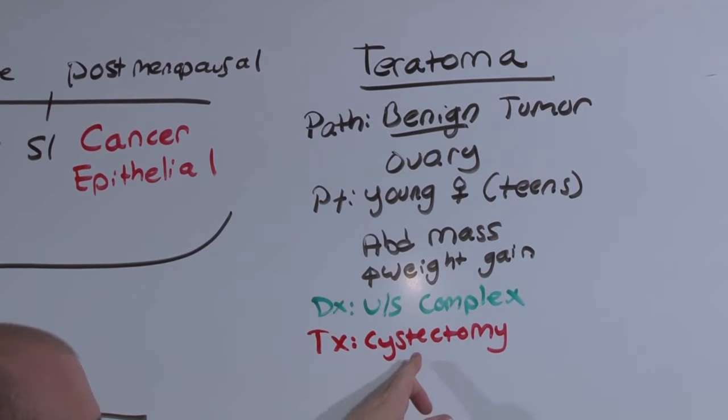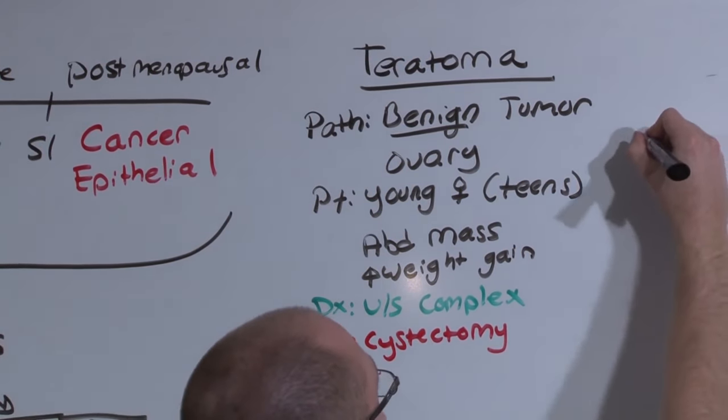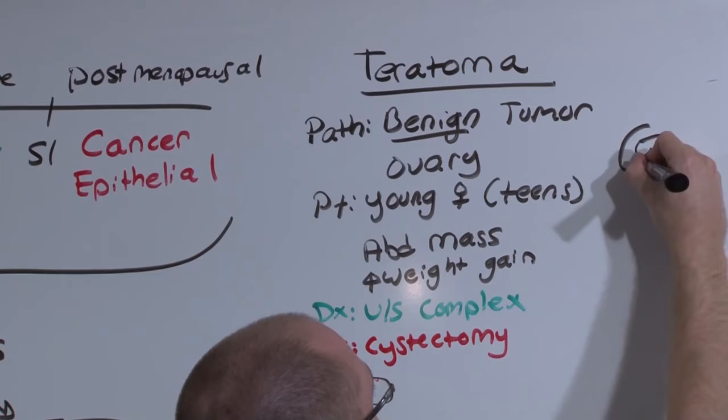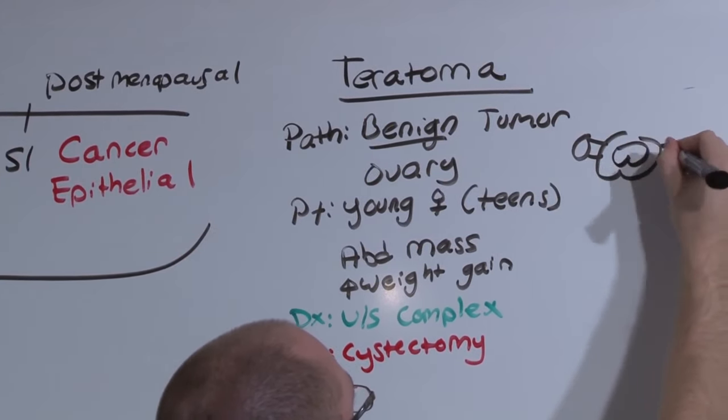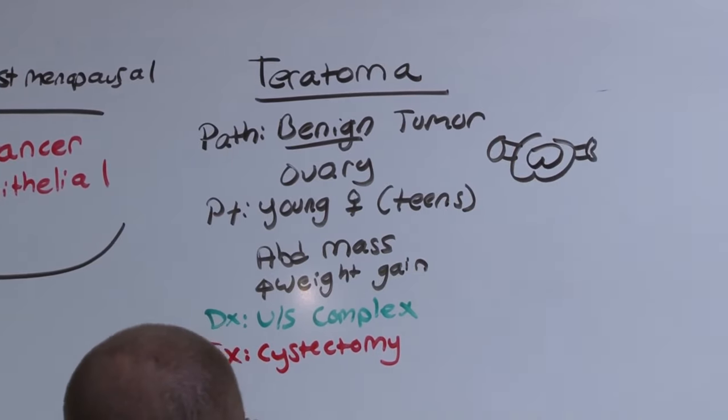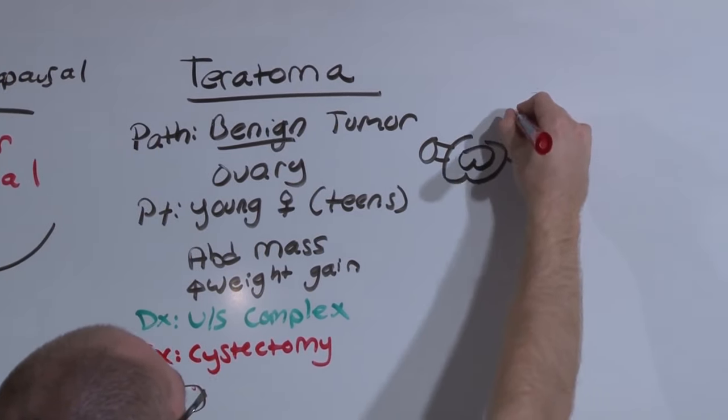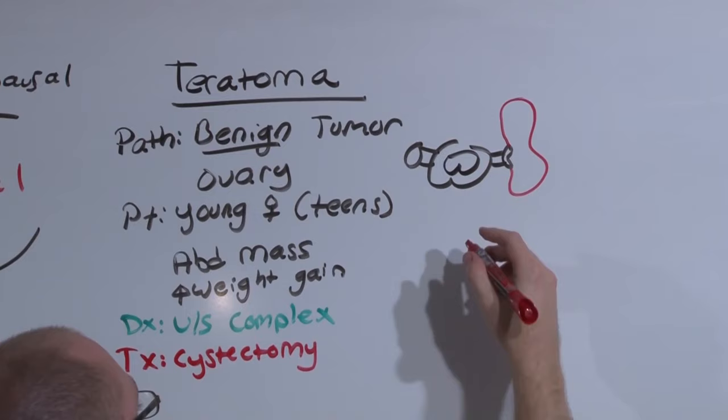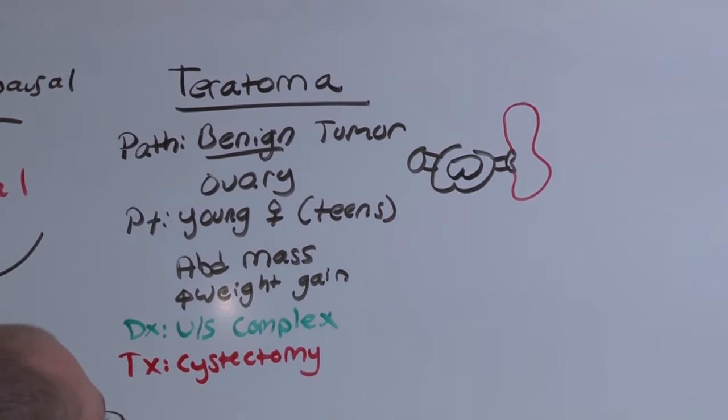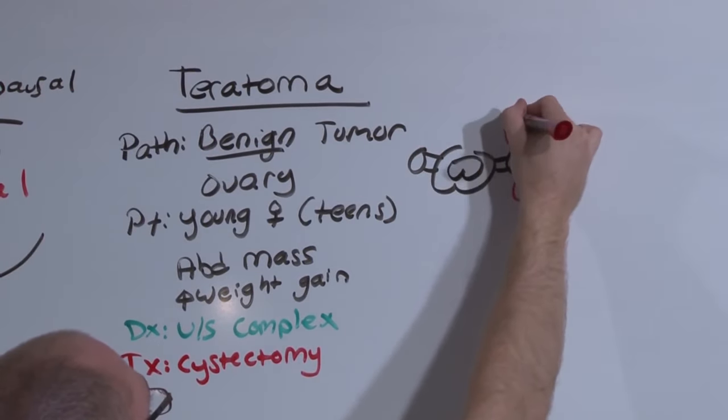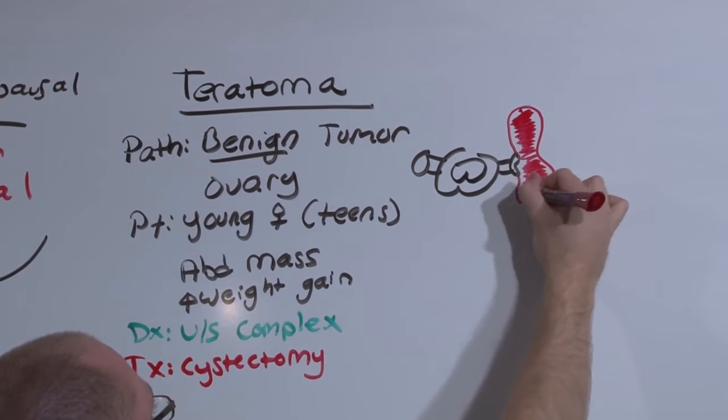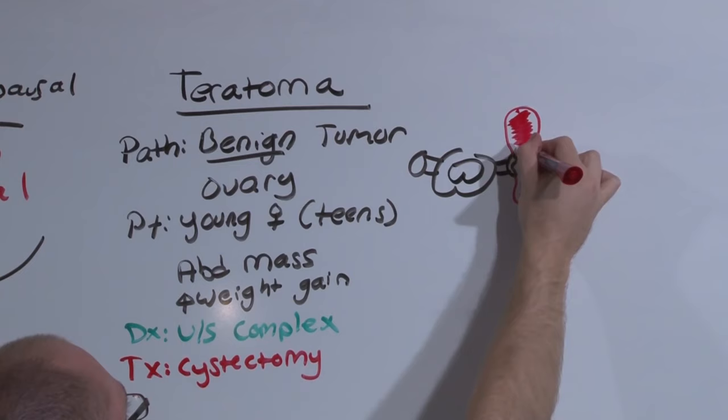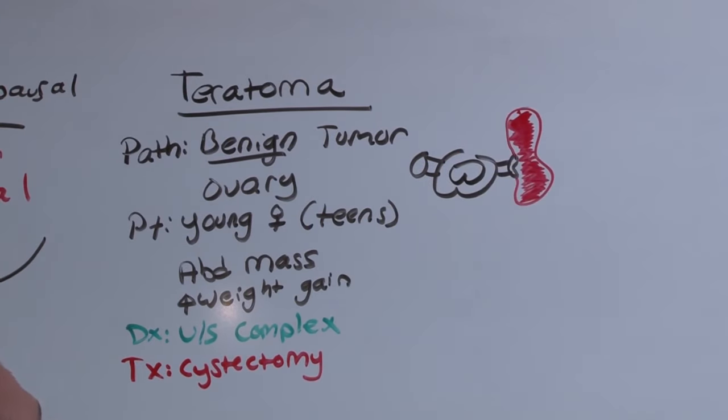If you were to take out the ovary and it recurred in a teenager, you may force a teenager to go through menopause. So you need to be very conservative with teratomas because they are benign. You simply remove the cyst itself. And these can be quite visually impressive. The tumor itself may be bigger than all the GYN organs together, and it is generally a very large complex cyst. This is the tumor that might have teeth, hair, or eyes in it.